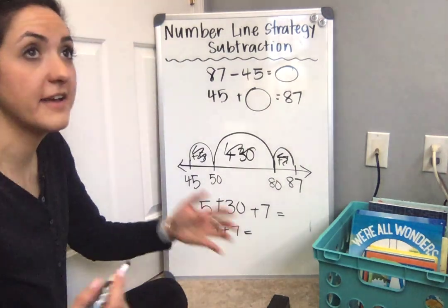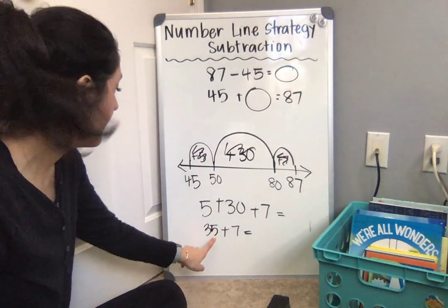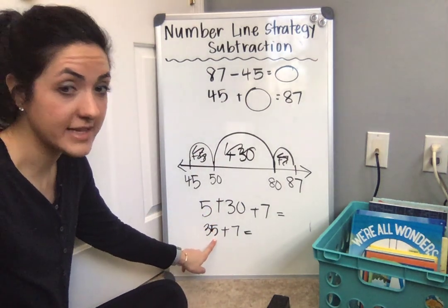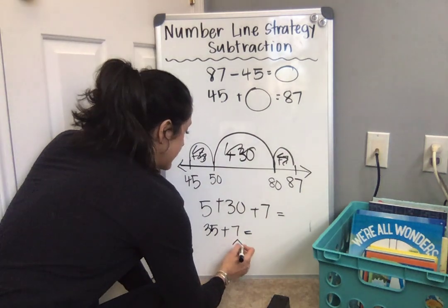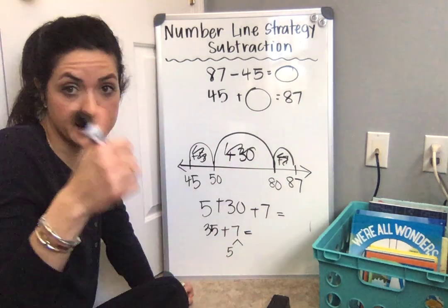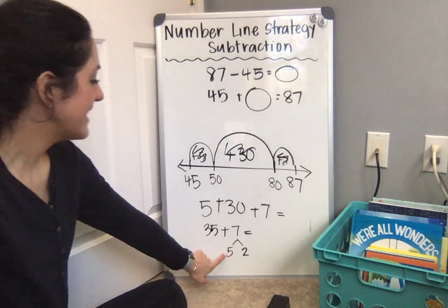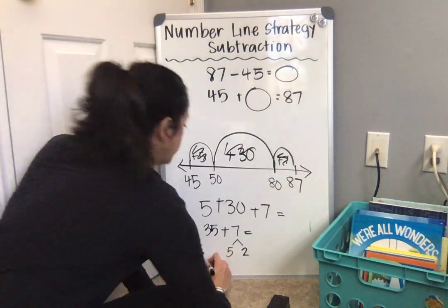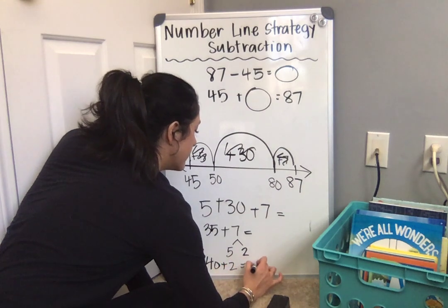Now, if I don't know 35 plus 7, I could again look for a friendly number. So I know that 5 more gets me to a friendly number, and I know that there is 5 in 7. So if I break apart 7 into 5, and how many more do I need to make 7? 5, 6, 7—that's 2. Then I can easily add: 35 plus 5 is 40, plus 2 more equals 42.